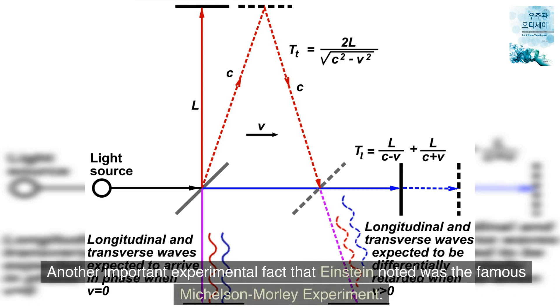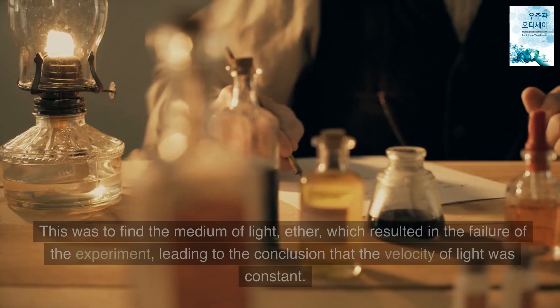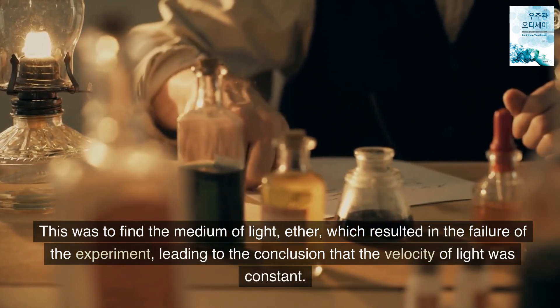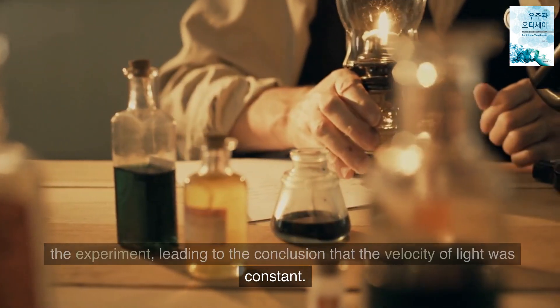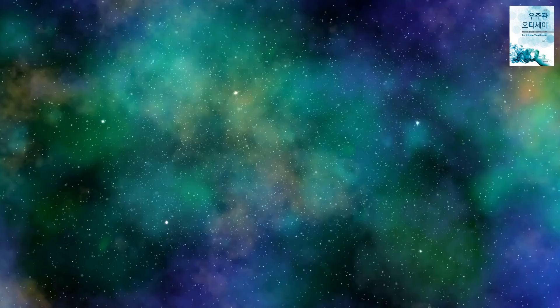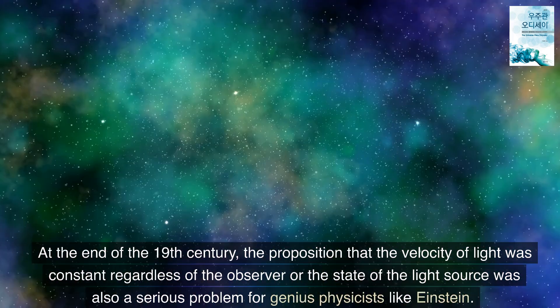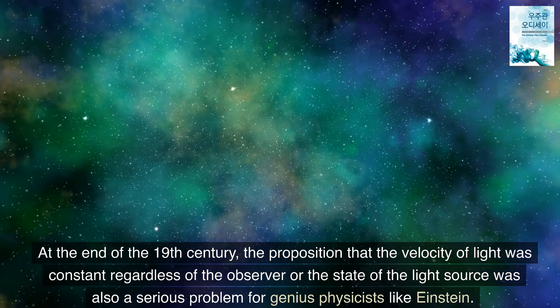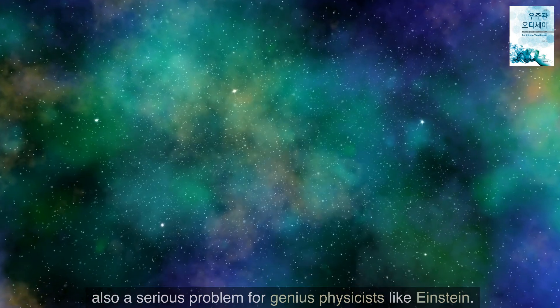Another important experimental fact that Einstein noted was the famous Michelson-Morley experiment. This was to find the medium of light, ether, which resulted in the failure of the experiment, leading to the conclusion that the velocity of light was constant. At the end of the 19th century, the proposition that the velocity of light was constant regardless of the observer or the state of the light source was also a serious problem for genius physicists like Einstein.